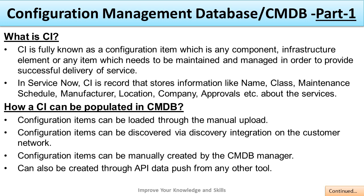How can a CI be populated in CMDB? A configuration item can be loaded through manual upload. A configuration item can be discovered via discovery integration or on the customer network. A configuration item can be manually created by a CMDB manager. It can also be created through API data push from any other tool.